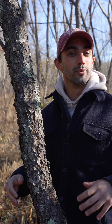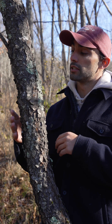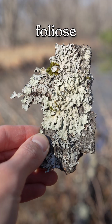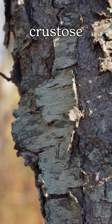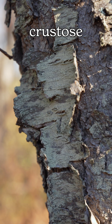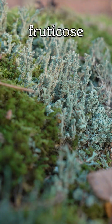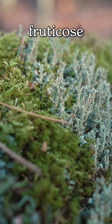Lichens are extremely diverse in the way they grow, but three of the most common growth forms include foliose, or leaf-like, crustose, or crust-like, and fruticose, which have finger-like projections.